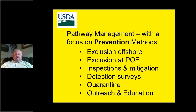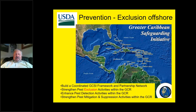An example of prevention involving exclusion offshore is the Greater Caribbean Safeguarding Initiative. In the Caribbean region, one of the big concerns are fruit flies — true fruit flies like Caribbean fruit fly and Medfly. The exclusion took the form of building partnerships and networks throughout that region so that collectively there could be more exclusion work done to prevent things from getting onto conveyances in the first place, enhanced pest detection activities, and methods to mitigate and suppress fruit fly populations in countries that might allow them to move to other countries, helping safeguard places like Florida.